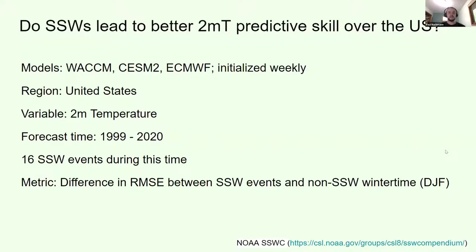The question that Innocent and I asked was: do SSWs lead to better two-meter temperature predictive skill over the United States? We looked at three different models — WACCM, CESM2, and the ECMWF models. Each of these were initialized weekly. We looked at the United States and two-meter temperature. The forecast time period we used was 1999 to 2020, during which there were 16 SSW events. The metric we used to evaluate was the difference in root mean squared error between the SSW events and the non-SSW wintertime — December, January, February.